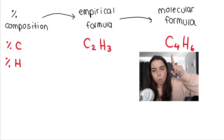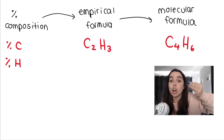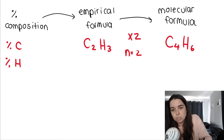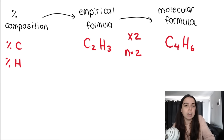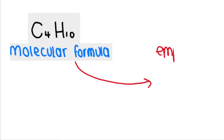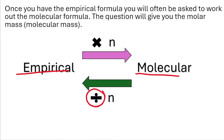The molecular formula is not the simplest version. To get from C₂ to C₄, you multiply by two — if you multiply the carbons by two, you have to multiply the hydrogens by two as well. So n equals two in this case. To go from molecular to empirical we divide by n — essentially dividing by the highest common factor. For example, C₄H₁₀ divided gives C₂H₅, which is the simplest form. Going the other way, from empirical to molecular, we multiply by n.